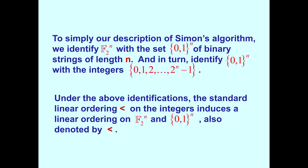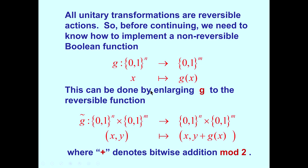To simply describe Simon's algorithm, we identify the elements of the vector space F2 sub n with all binary strings of length n, and in turn identify all binary strings of length n with the integers 0 through 2 to the n minus 1. Under this identification, we have a linear ordering of the integers, which induces a linear ordering on our field of binary strings, and on the set of all binary strings, and we will use that later.